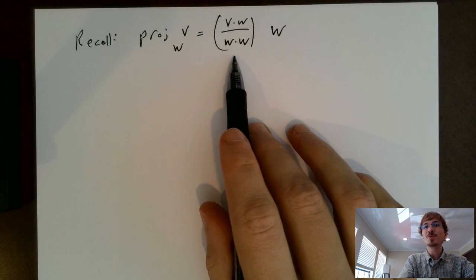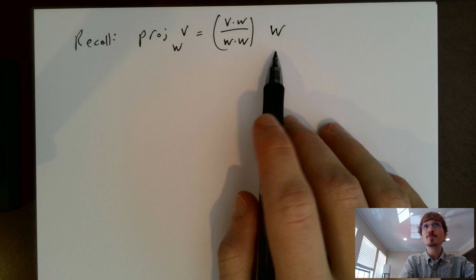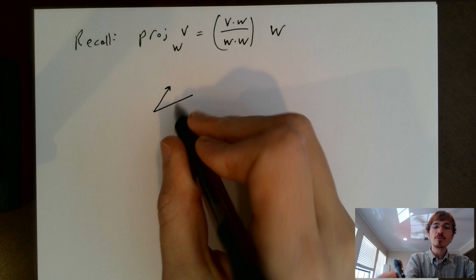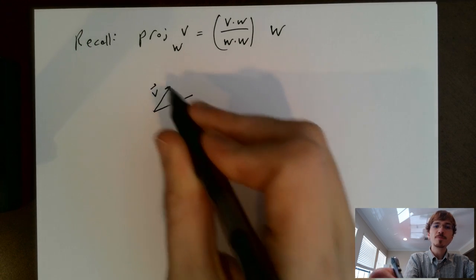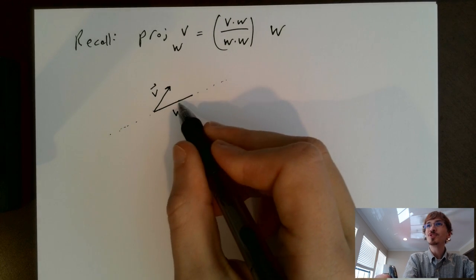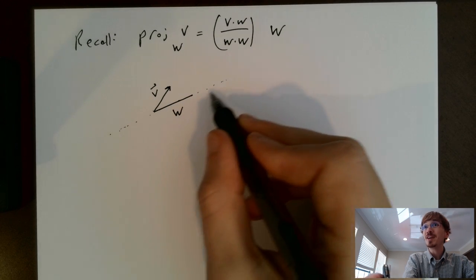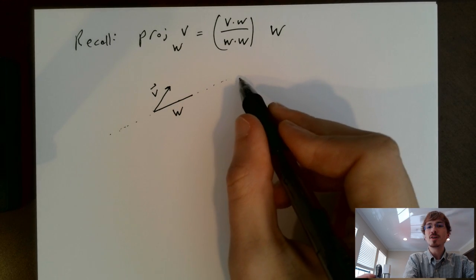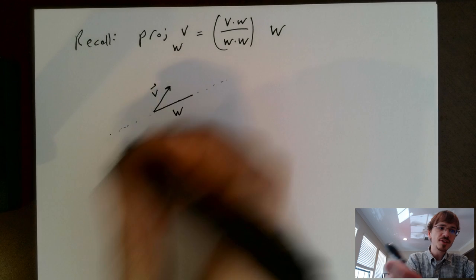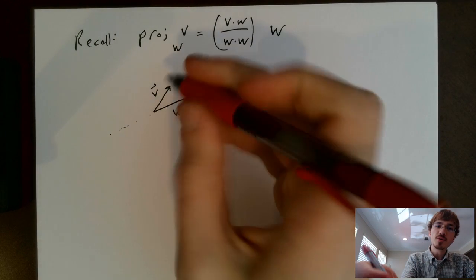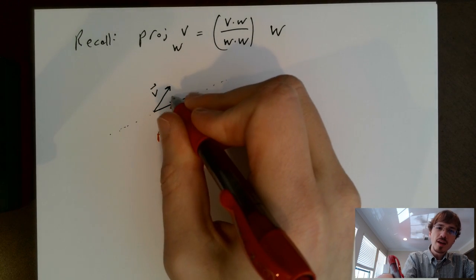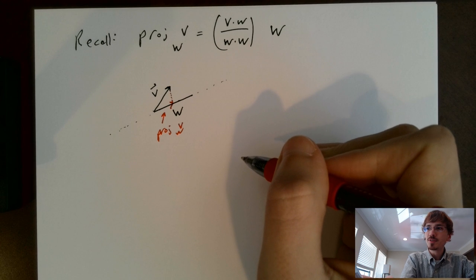This first quantity is a scalar, multiplied by the vector w. For the picture, we had some vector w down here and this is our vector v. Really, if we project onto w we can also view this as projecting onto the subspace spanned by w, because the span of w forms a line. And so this is our projection — the component in the direction of w. Here's our projection.